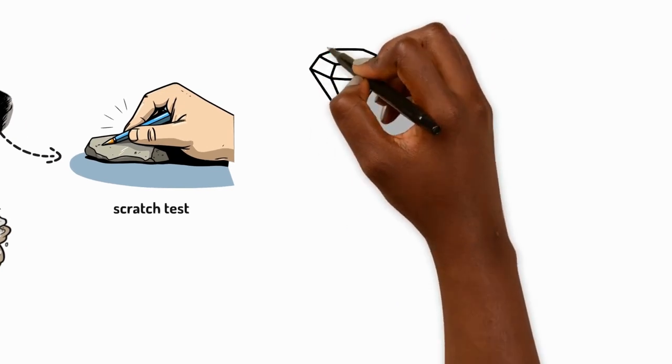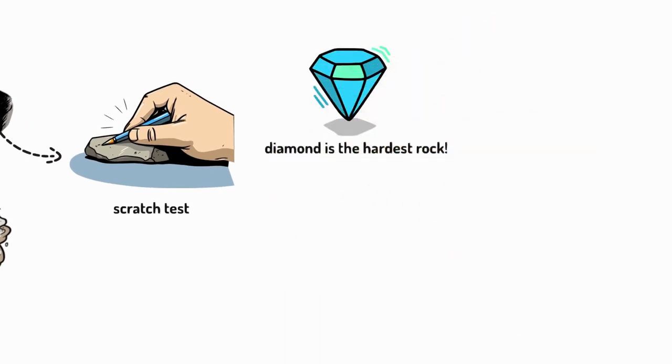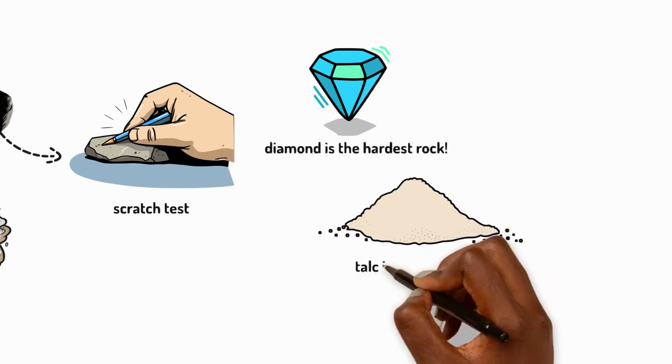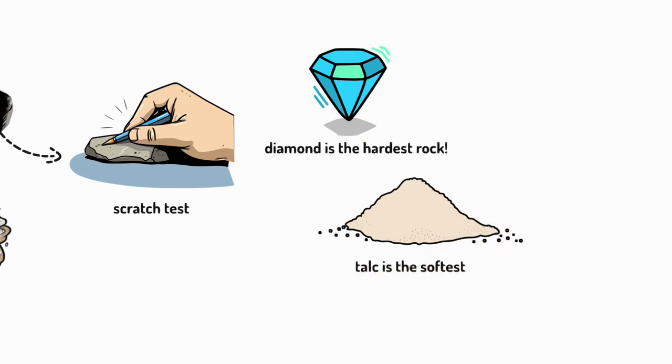Did you know diamond is the hardest rock and talc is the softest? Diamonds can scratch anything, but talc, even a fingernail can scratch it.